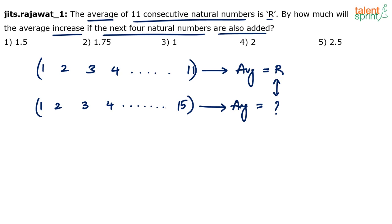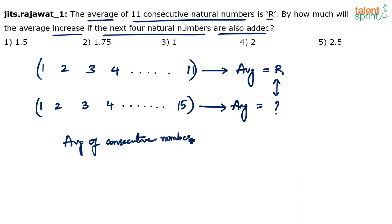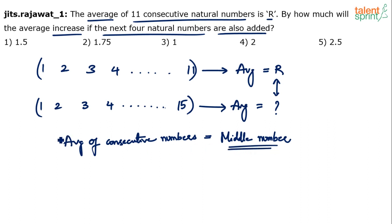We know that the average of consecutive numbers — whether consecutive natural numbers, consecutive even numbers, consecutive odd numbers, or consecutive multiples — is always the middle number. It's always the number which is in the middle. If there is no single middle number, then we take the average of the two middle numbers. This is the key concept.